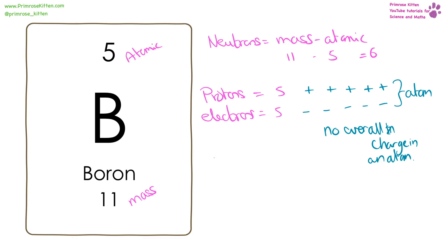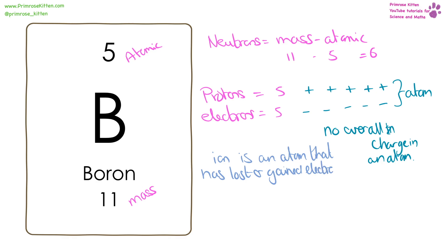An ion is formed when an atom has lost or gained electrons. So for example, if we have our boron again with five positive and five negative charges, and it loses an electron, it no longer has the same number of positive and negative charges, so it's going to be charged. It has created an ion.